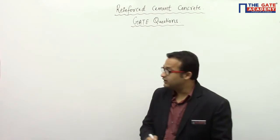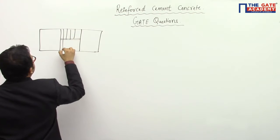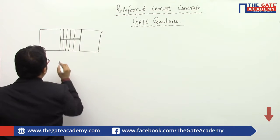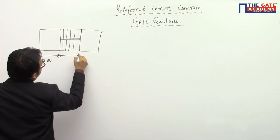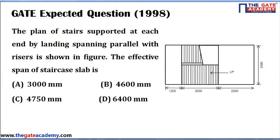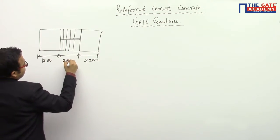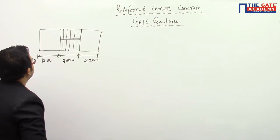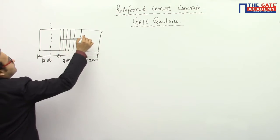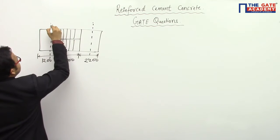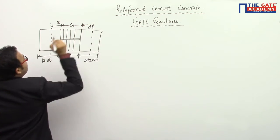Let me draw the figure. Here are the steps — risers and treads. This dimension is the landing, given as 1200 mm. This other dimension is given as 2200 mm. These two are called landings. This middle portion is called the going, with a dimension of 300 mm. I will call half of the 1200 mm landing 'x', half of the 2200 mm landing 'y', and the going 'g'.